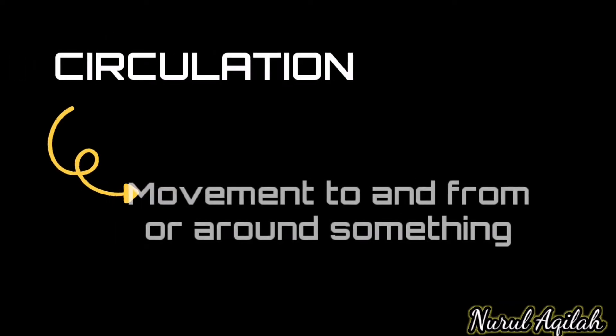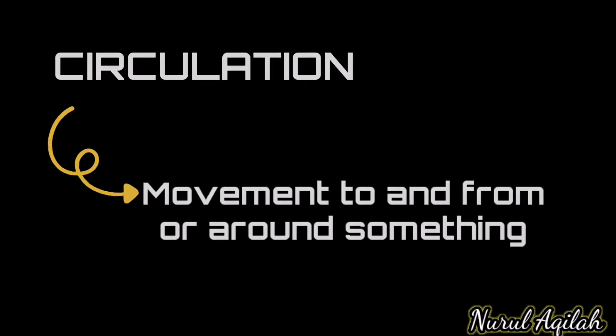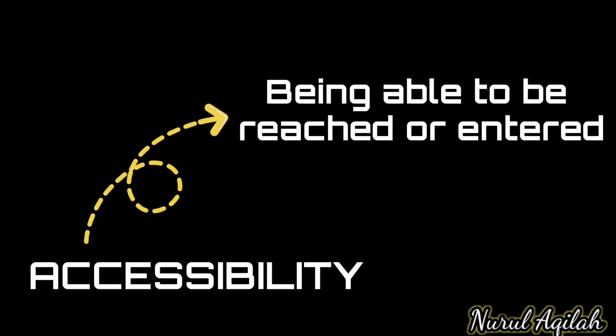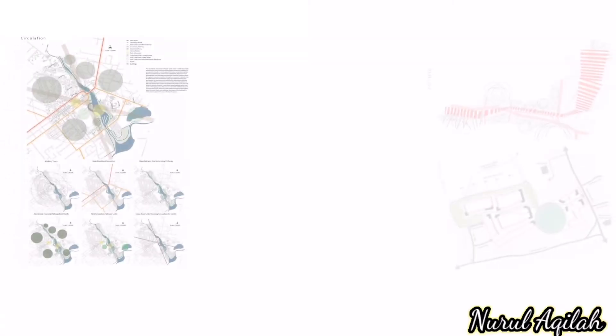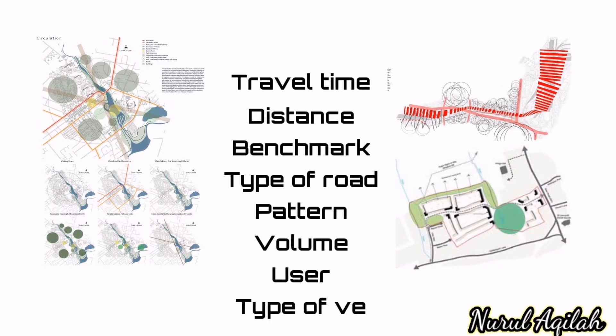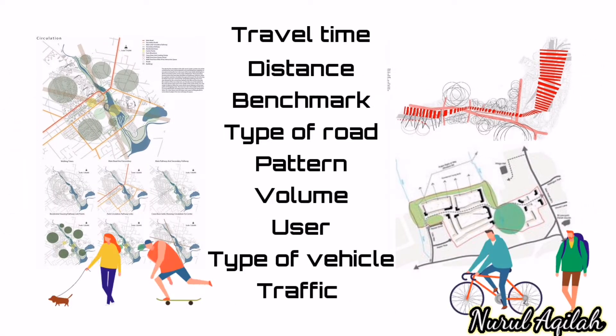Next, we move to circulation, which means movement to and from or around something, while accessibility is the quality of being able to be reached or entered. When you do the inventory for this topic, you must consider all these elements in order to design your circulation, your entrance, and your exit for your site.